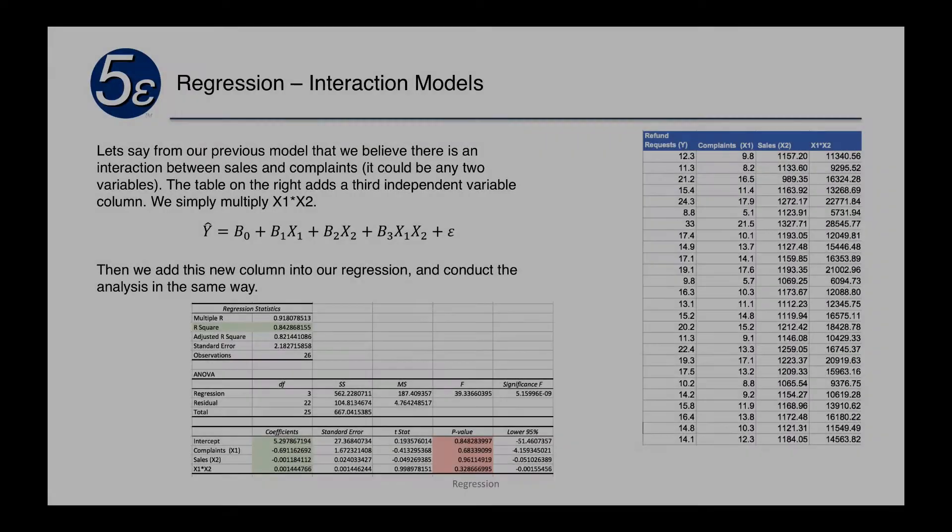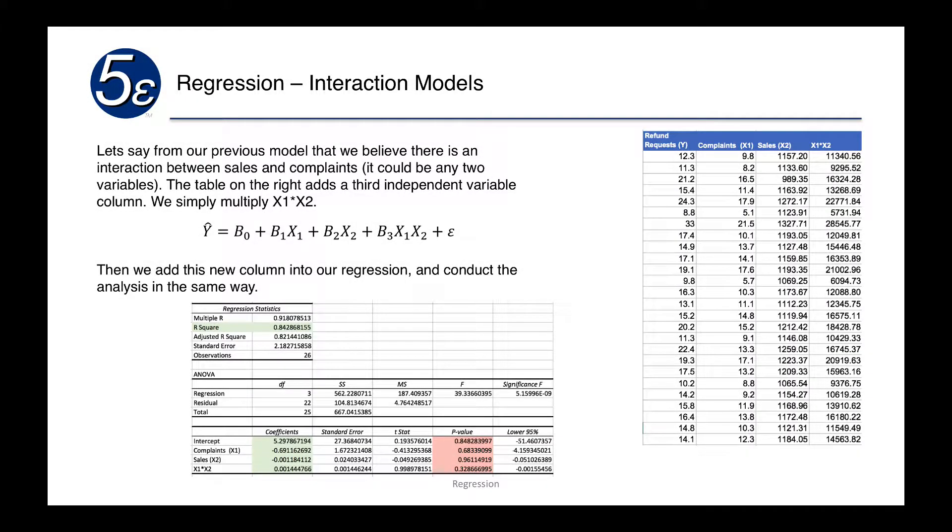From our previous model, we said we believe that there is an interaction between sales and complaints. It could be any two variables for that matter. The table on the right adds a third independent variable where we simply multiply x1 by x2.